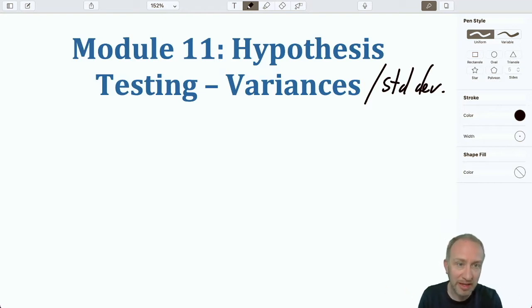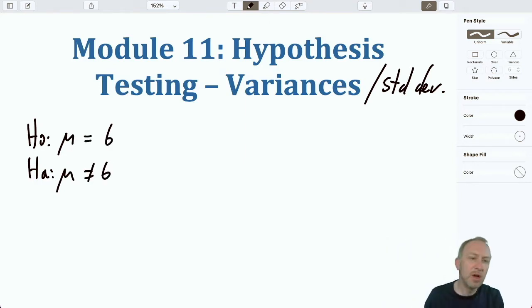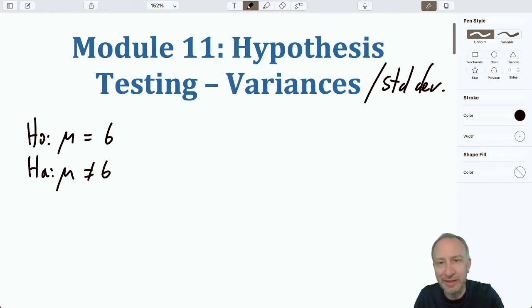Okay, now why do we want to do tests on variances? Well, remember if we go back to the beginning of module 9, if you're thinking about those single population tests on a mean, let's say we're doing a test to see whether or not the mean was equal to 6.